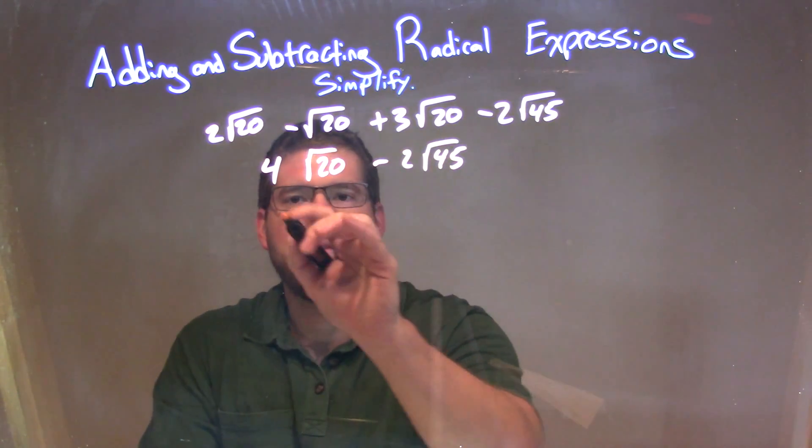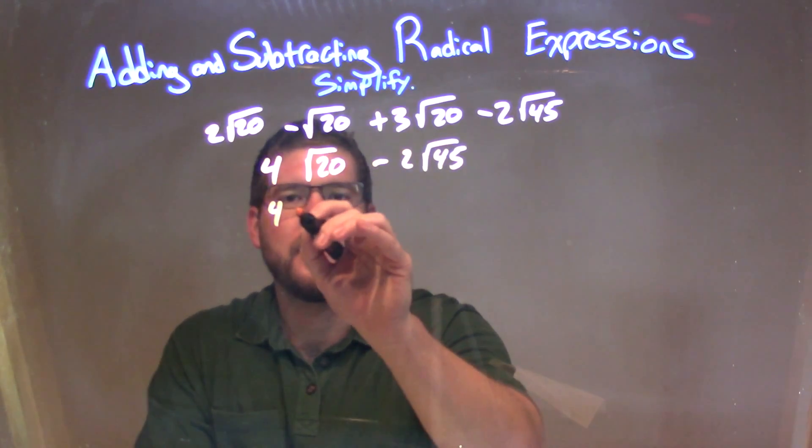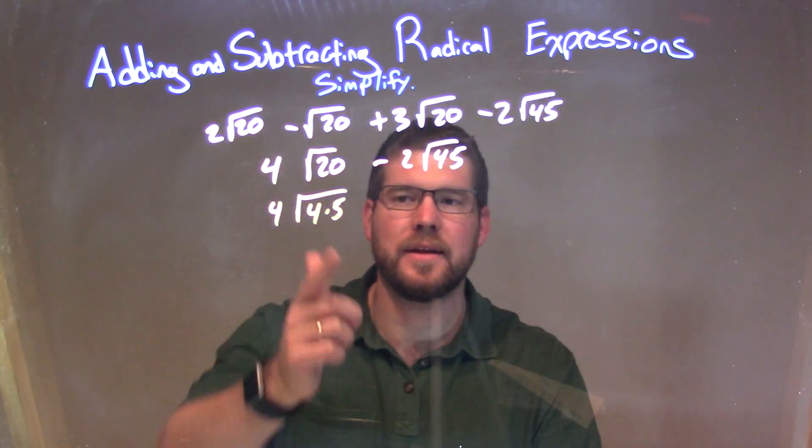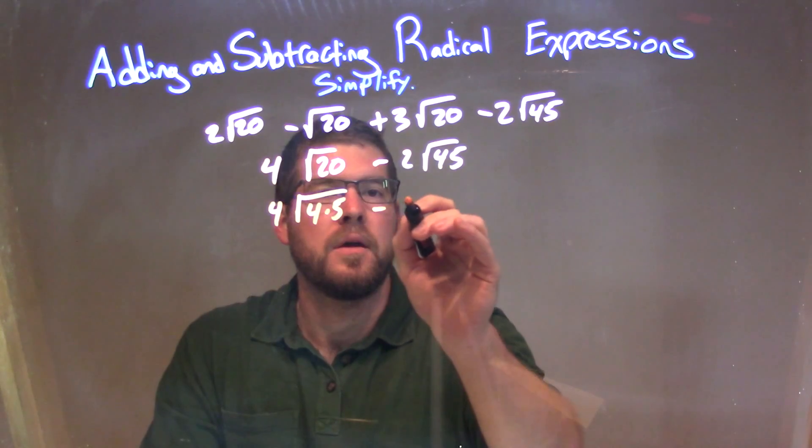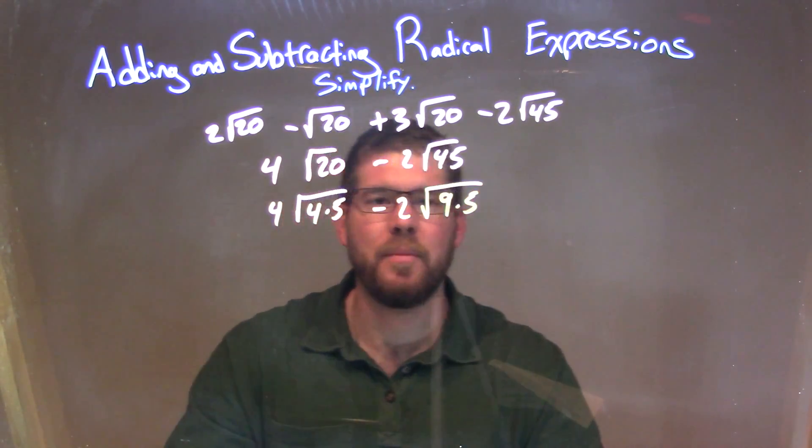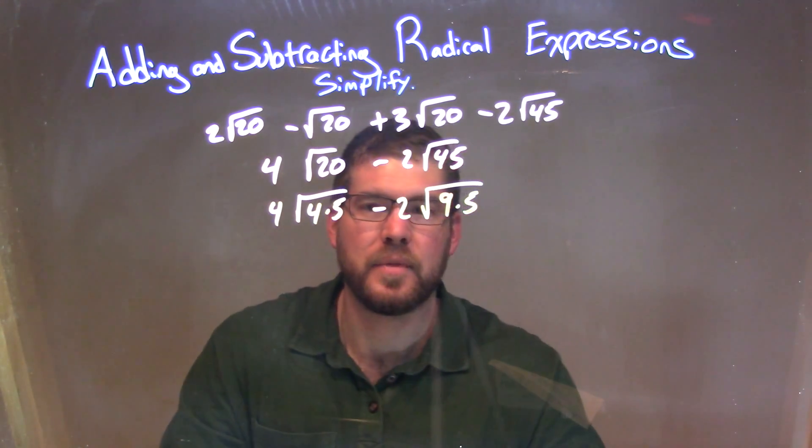Well, square root of 20, I can break that down. So 4 square root of 20 is—well, 20 is 4 times 5, and I choose 4 times 5 because I know I can take the square root of 4. Minus 2, same thing with 45. 45 is 9 times 5, and I'm doing that because I know I can take the square root of 9.